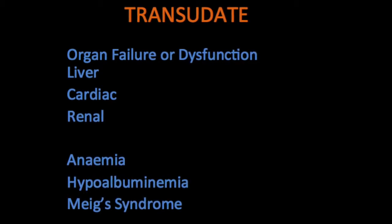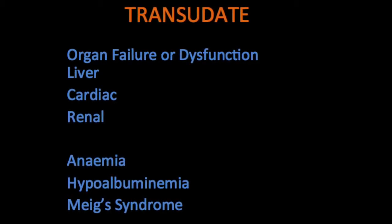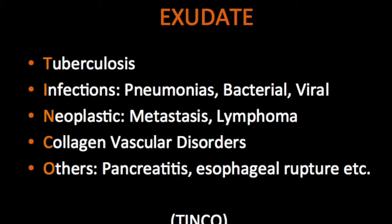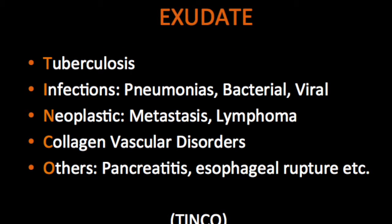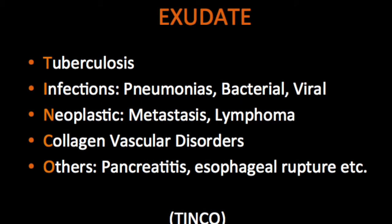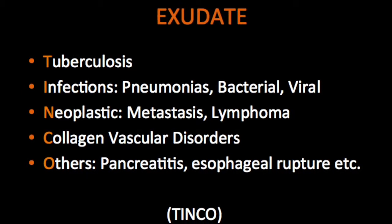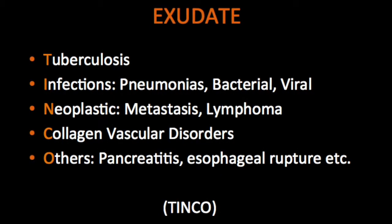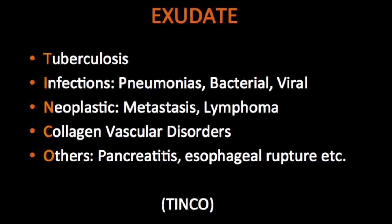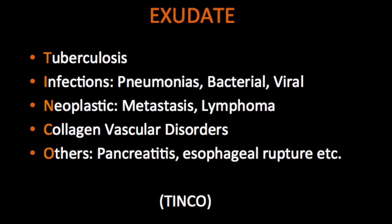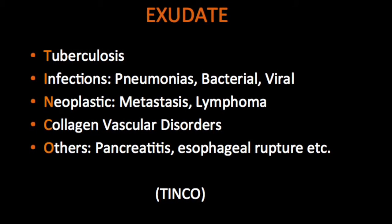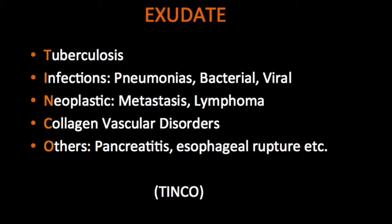Another important cause of transudate is Meigs syndrome, in which you have a female patient with an ovarian cyst along with an ipsilateral one-sided pleural effusion. If you look at exudative causes, you are looking at basically infections — tuberculosis tops the list. But of course there can be any lung condition irritating the lung, or infection, that can give rise to a pleural effusion. Parapneumonic effusions in pneumonias or even pleural effusions in pulmonary embolisms and pulmonary infarcts can be seen.